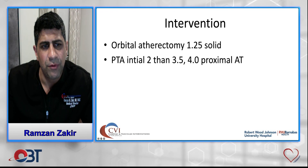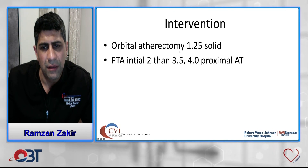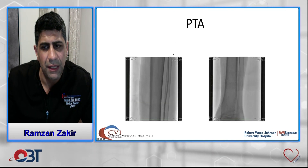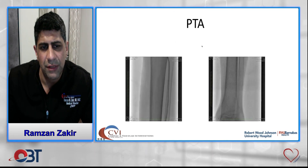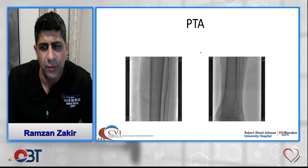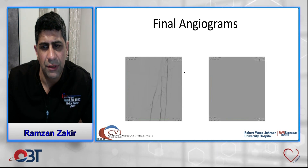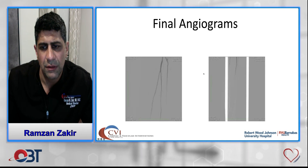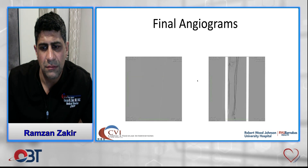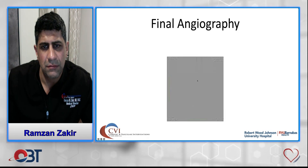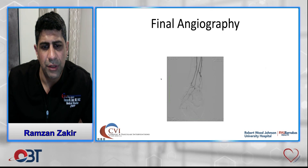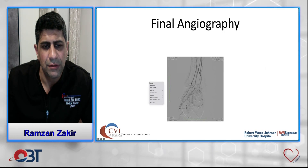We externalized the wire, performed orbital atherectomy, then sequential PTA. You can see a nice balloon inflation without a waist, and a very nice final result in the anterior tibial artery with good blush into the toes.